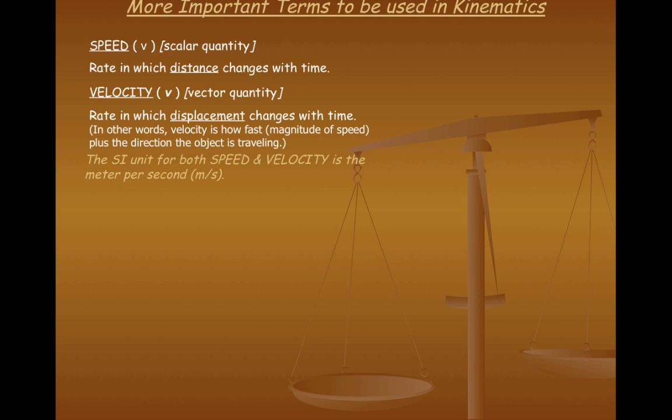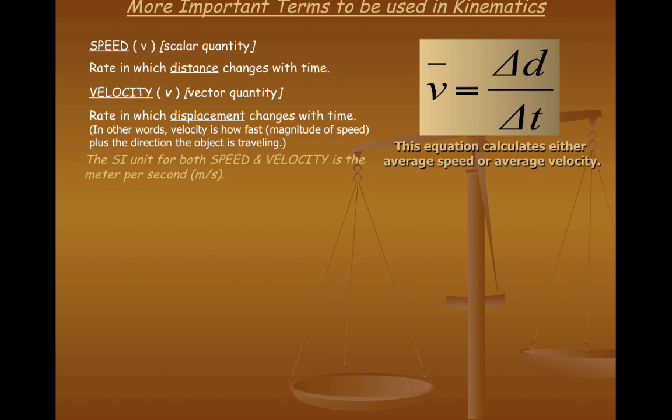We've come to the time where we're now going to introduce our very first equation in physics. Here it comes. Bam! V bar is equal to delta D over delta T. This equation, by the way, now calculates either average speed or average velocity. It depends on what quantities that you have provided for you. But if you use this equation and you wish to calculate average speed, then you're going to use D is going to represent distance and T will represent time. If you're using this equation to calculate average velocity, then D or delta D is going to represent displacement.